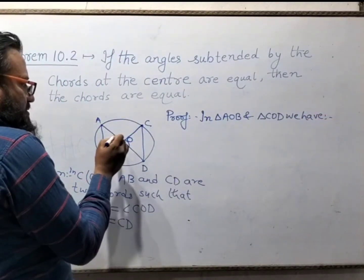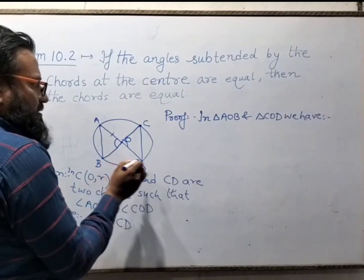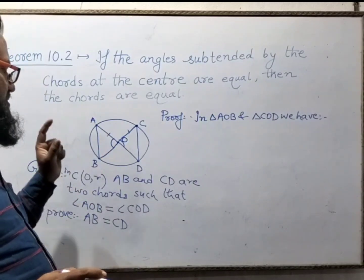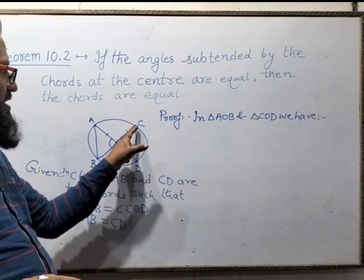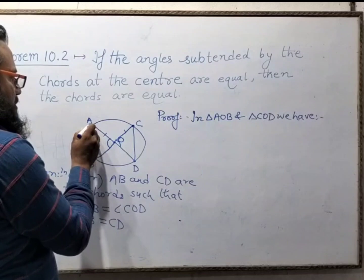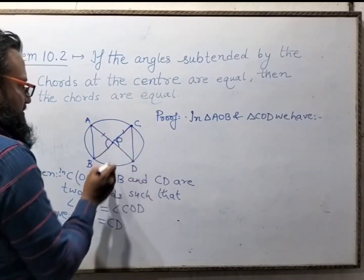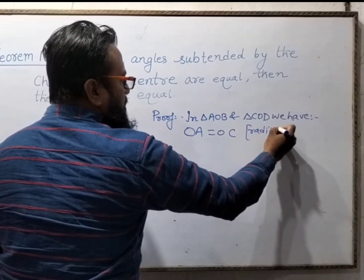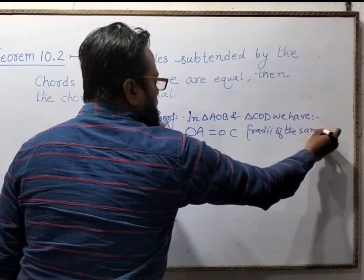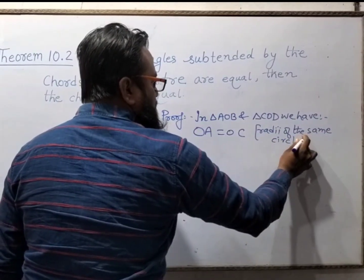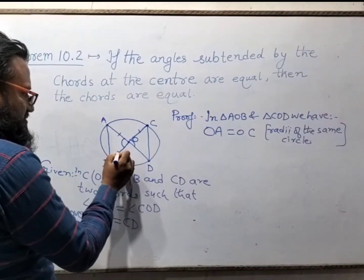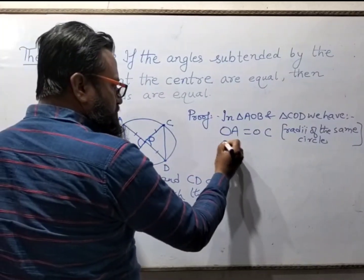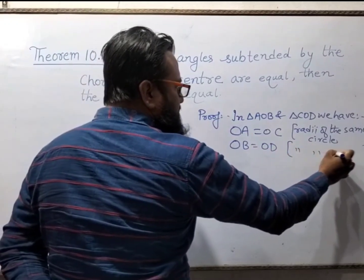OA is a radius and OC is also a radius. The line segment joining the center and any point on the circle is called the radius of the circle. Therefore, OA is equal to OC because they are radii of the same circle. Similarly, OB is also a radius and OD is also a radius, hence OB is equal to OD — same reason, radii of the same circle.